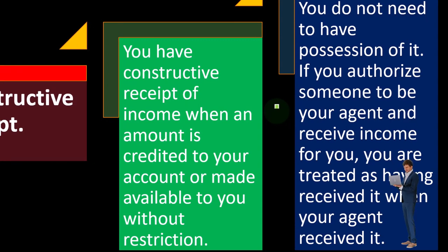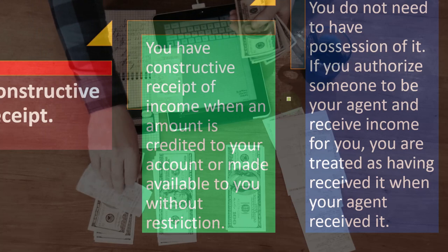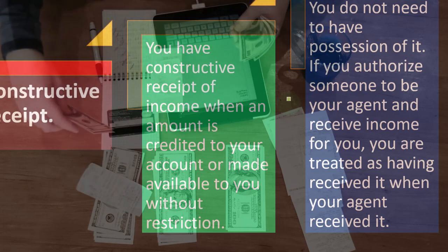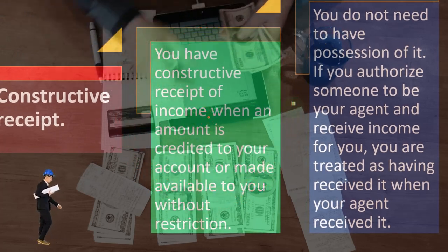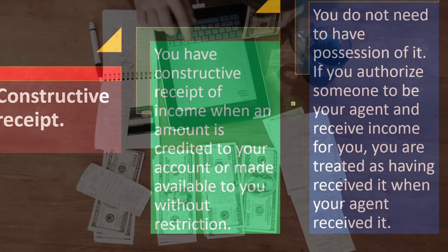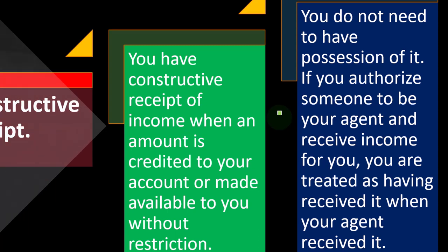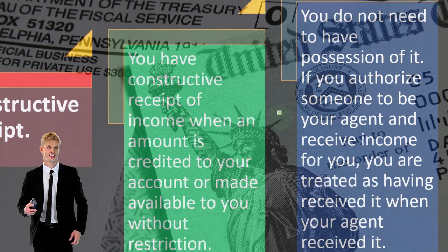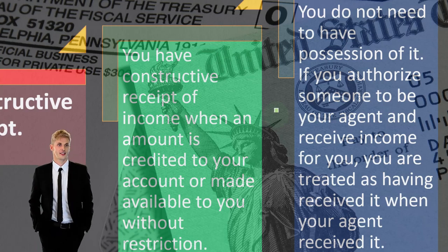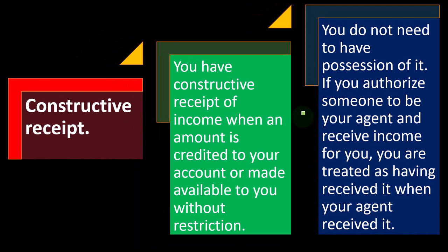You could try to prepay expenses or delay income — for example, telling clients not to pay you until January, or receiving a check but not cashing it until January. However, if you have constructive receipt — meaning you're holding the check and nothing is stopping you from cashing it — it should be income at that point. Even if you give the check to an assistant and they hold it until January, you still had constructive receipt before that. You could have cashed it anytime, so it should have been recorded as income.